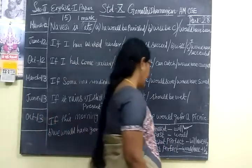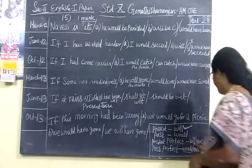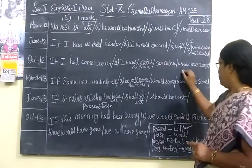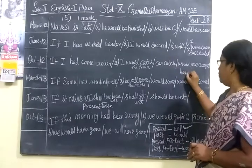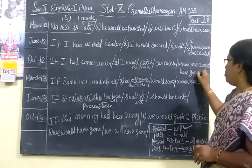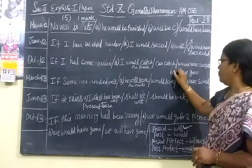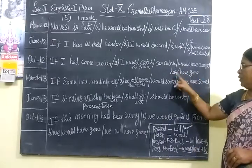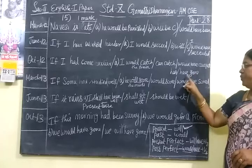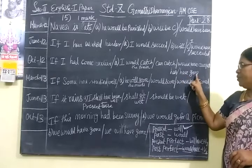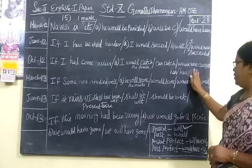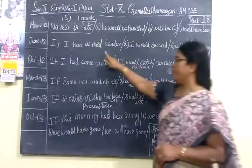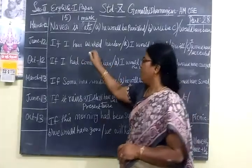For present perfect, you are choosing 'will + have + verb 3.' Present perfect uses 'have gone' or 'has gone' — that is, 'has + verb 3' or 'have + verb 3.' For past perfect, you are using 'had + verb 3.'